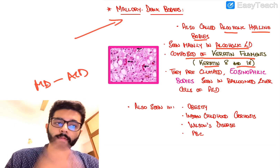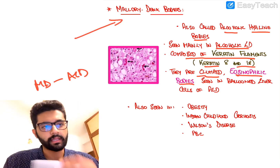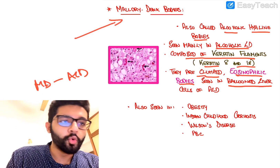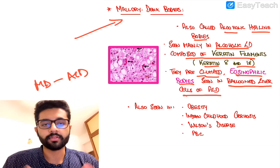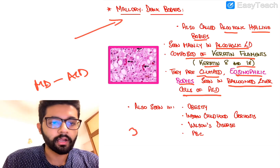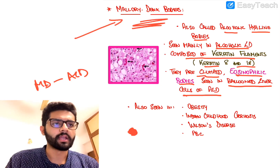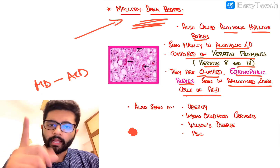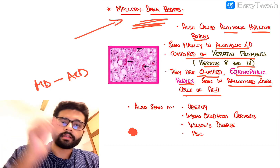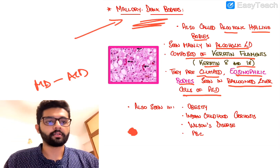Mallory-Denk bodies are primarily composed of keratin filaments — keratin filament 8 and 18 in particular. They are clumped eosinophilic intracytoplasmic bodies seen in the ballooned hepatocytes. In alcoholic liver disease you get ballooning of hepatocytes, and in the cytoplasm of these enlarged hepatocytes you find small clumps of pink material called Mallory-Denk bodies. So in one line: Mallory-Denk bodies are eosinophilic intracytoplasmic inclusion bodies in ballooned hepatocytes, composed of keratin filaments.